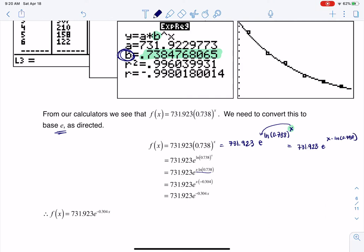Well, I can figure out what this number is on my calculator. And when I punch that into my calculator, that's where I'm getting this negative 0.304. And if I rewrite that a little bit, all of a sudden, I have an exponential model, and you see that my base is e.